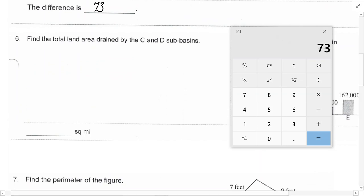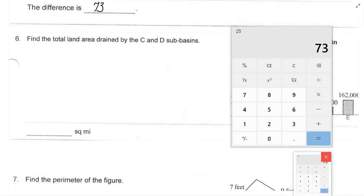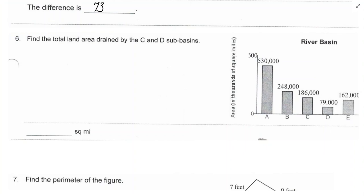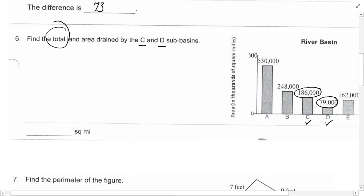All right, next. Let me move my calculator a little bit out of the way. All right, the next one says, find the total, okay, total means addition, of the total land area drained by the C and D sub-basins. Well, you would have to understand, I suppose, some geography to understand all of what's going on. But, I am supposed to add the value here, which is in square miles, and the value here, because this one's C, and this one's D. Total means add. Let me grab my calculator back up.